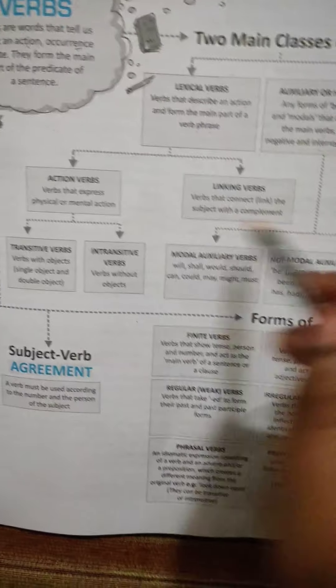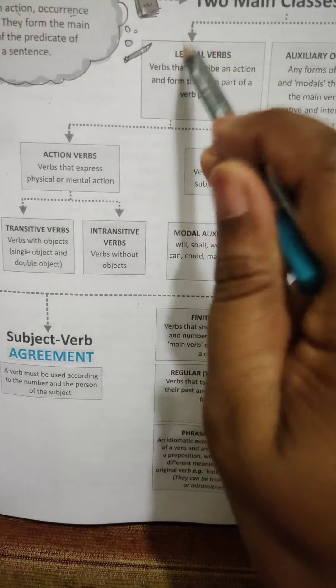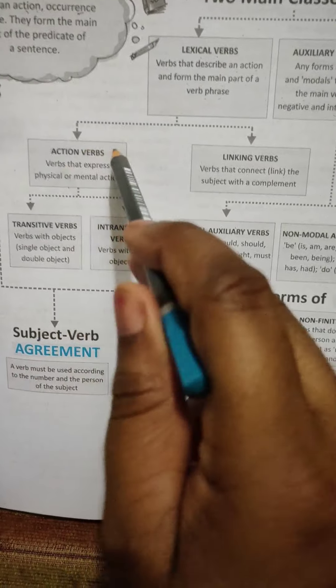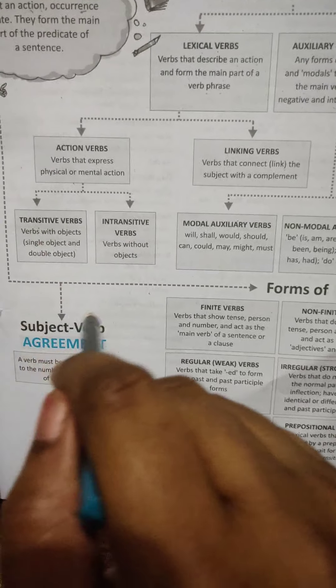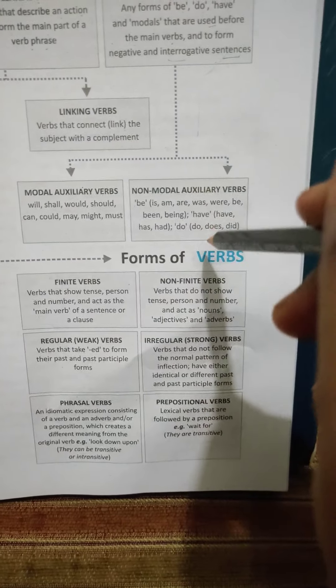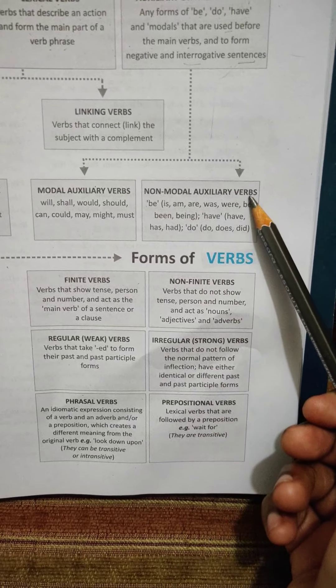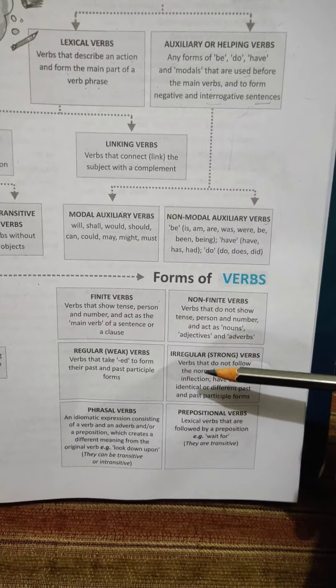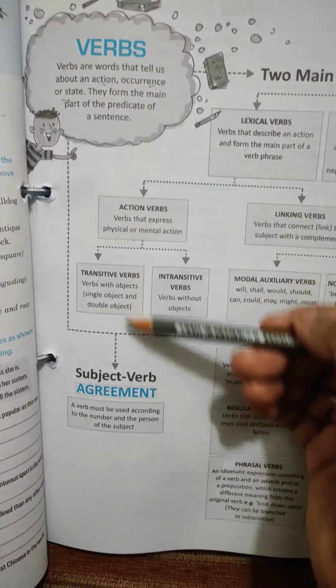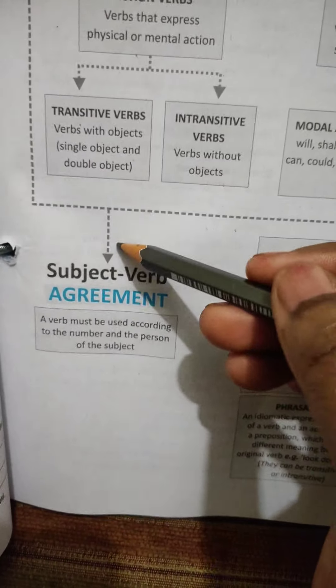So, let me explain the whole chart. Now, action verbs are here. Linking verbs are there under lexical verbs. So, action verbs further is divided into two. That is transitive verb, intransitive verb. And this side, these auxiliary verbs are divided into modal auxiliary verbs, non-modal auxiliary verbs, auxiliary verbs, so and so. Here verb has got one more arrow that will explain you, subject verb agreement.